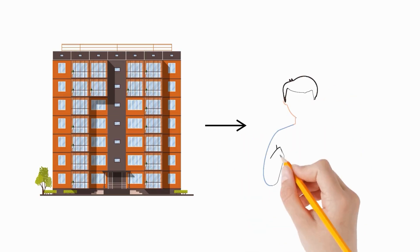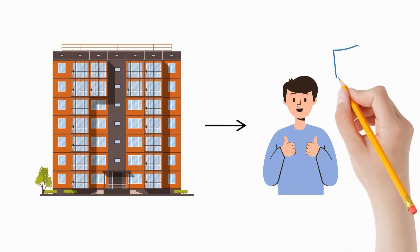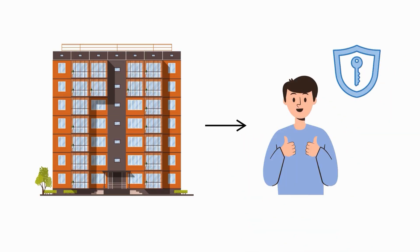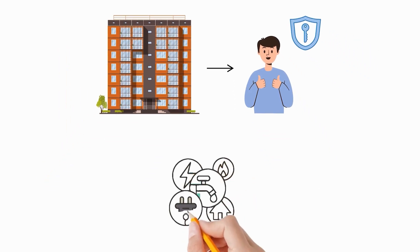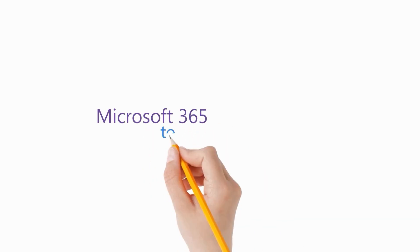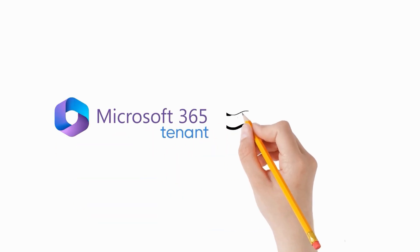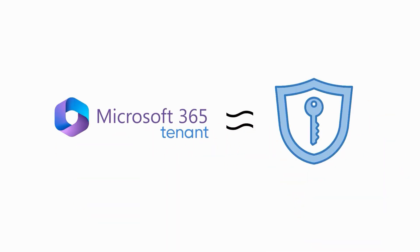Imagine living in a large apartment building where each resident has their own apartment, completely private and secure, yet sharing common utilities like electricity, water and elevators. A Microsoft 365 tenant works in a very similar way.